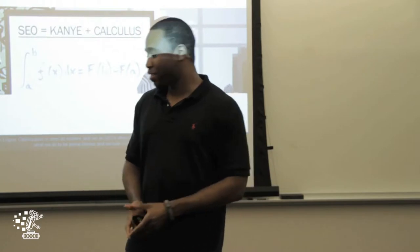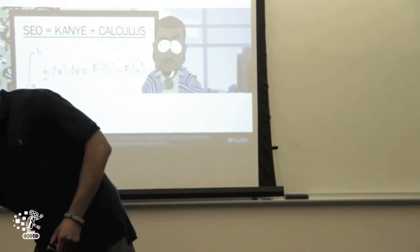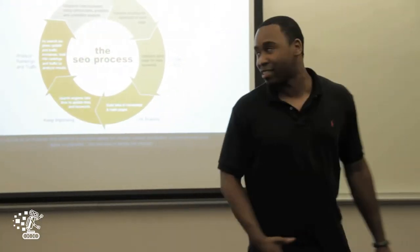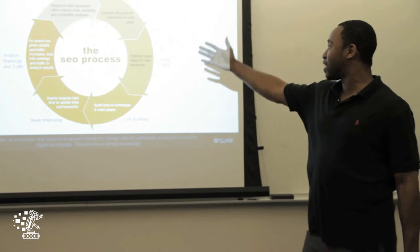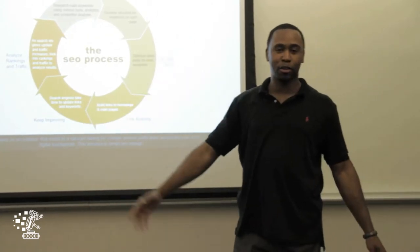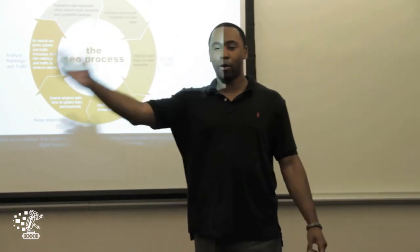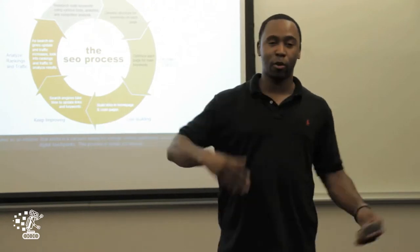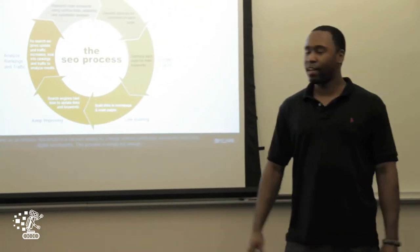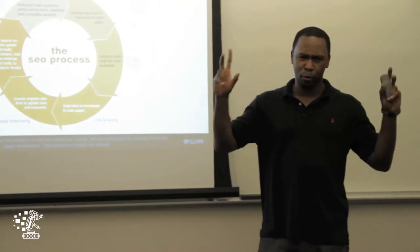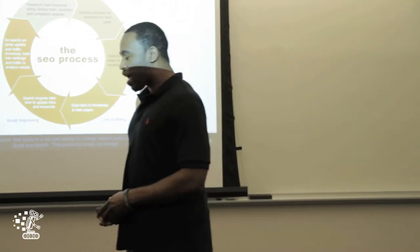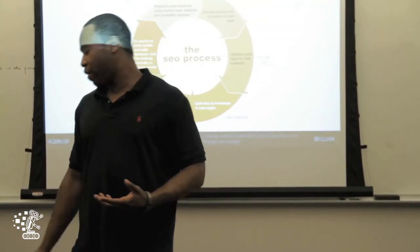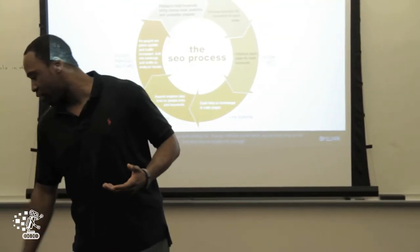SEO is the calculus of marketing. Typically the SEO process looks like this: figure out what your keywords are, figure out what the site is doing wrong, fix it, use the keywords more, build some links, and then keep improving — whatever that means. It leaves a lot out.